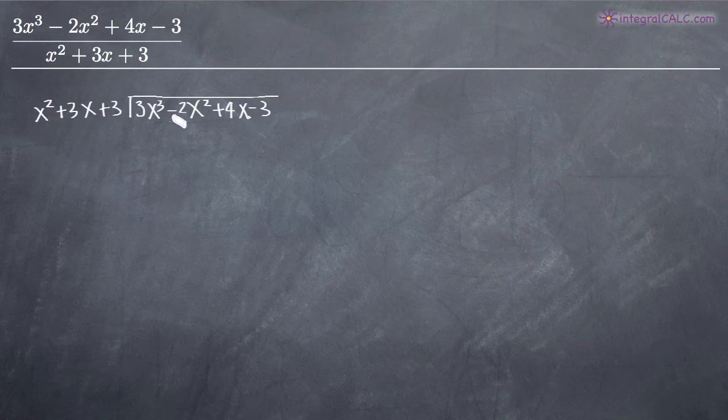Just like with long division before, start by figuring out what to multiply x² by to get 3x³. We multiply x² by 3x to get 3x³. Now that we've figured out it's 3x, we multiply 3x through each term of the denominator.